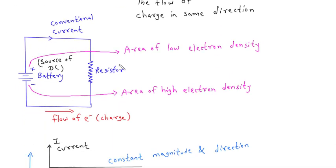We know that conventional current flows from positive terminal of battery to negative terminal of battery, and electrons flow from negative terminal of battery to positive terminal of battery. The positive terminal of battery is the area of low electron density, and negative terminal of battery is the area of high electron density.